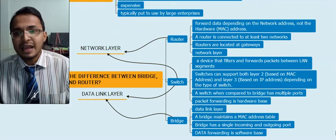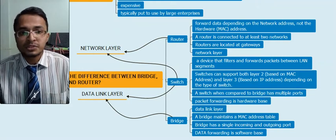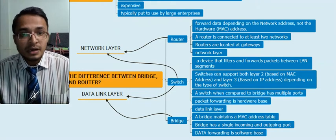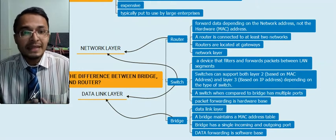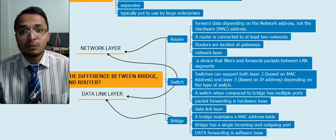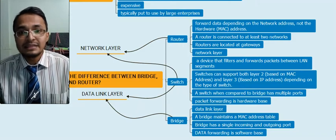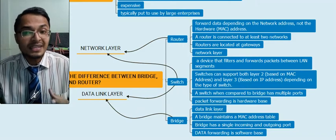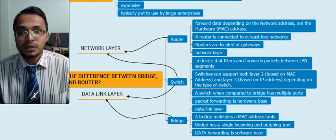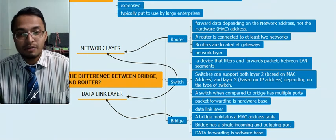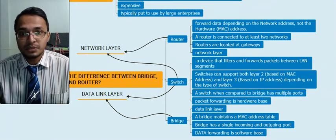Switches are hardware-based in their data forwarding and they have multiple ports. Talking about routers — routers are mainly network layer devices and are located at the gateways of the network. At least two networks are needed whenever you are using a router.